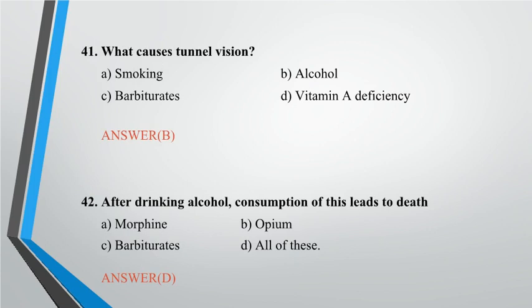Question 42: After drinking alcohol, consumption of this leads to death — A. Morphine, B. Opium, C. Barbiturates, D. All of these. Answer: D.